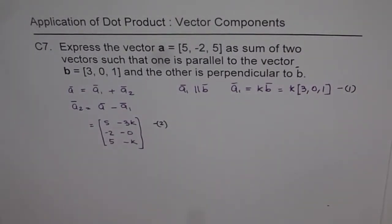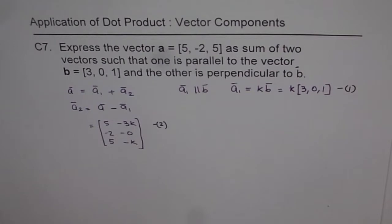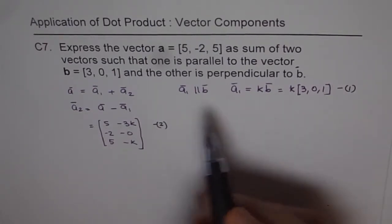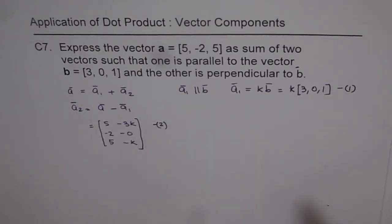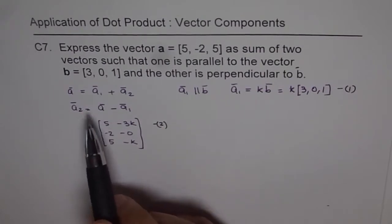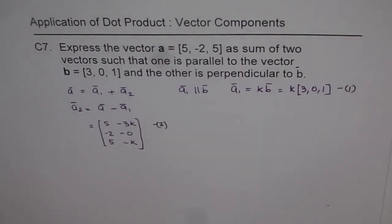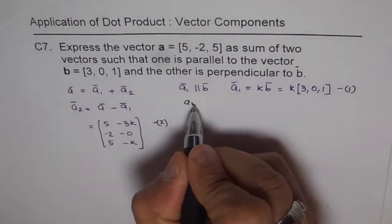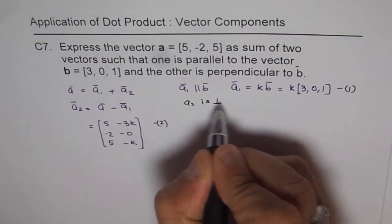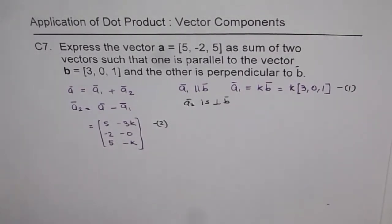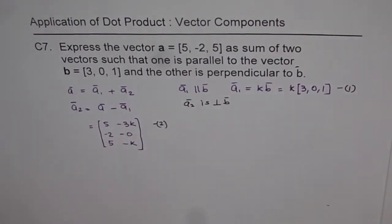Now, another condition which is given to us is that these two vectors a₁ and a₂ are perpendicular. Now, another condition given to us is that the vector a₂ is perpendicular to b. So now we will use the concept that a₂ is perpendicular to vector b. So we will get another equation from here and then solve.